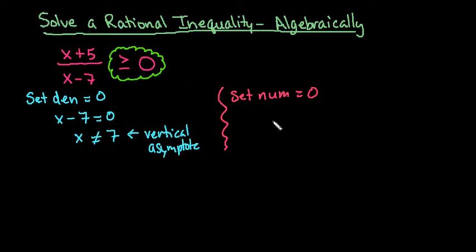If it was not equal to and just greater than, then we would use, we would say that we're not looking for this value. So we would just set the numerator equal to 0. So x plus 5 equals 0 and we end up with x equals negative 5.